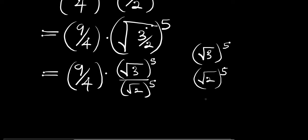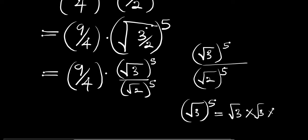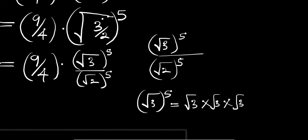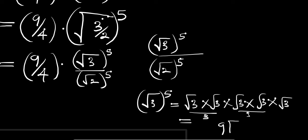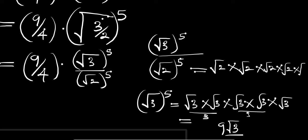Root of 3 to the power of 5 equals root of 3 times root of 3, times root of 3, times root of 3, times root of 3. Root of 3 times root of 3 gives 3, and root of 3 times root of 3 gives 3 again, so 3 times 3 gives 9, leaving us with 9 root of 3. Now for root of 2 to the power of 5, we have root of 2 times root of 2 times root of 2 times root of 2 times root of 2. Root of 2 times root of 2 gives 2, and root of 2 times root of 2 gives 2, so we get 4 root of 2.